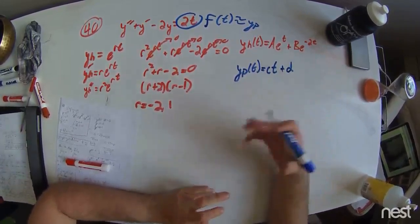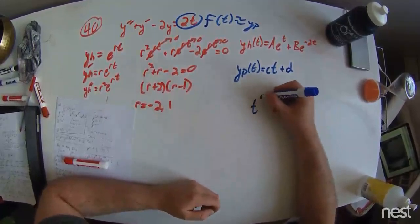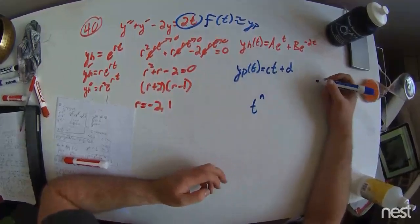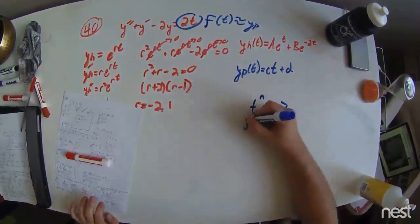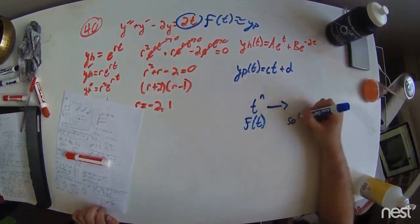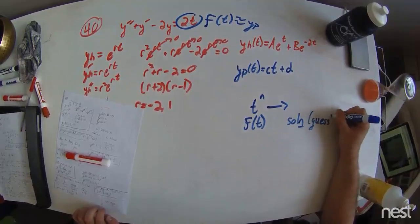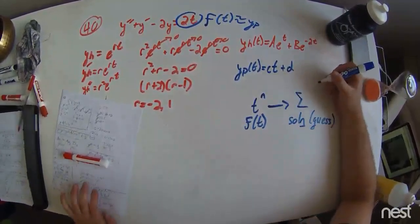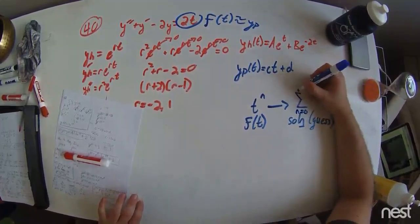We assume this because in the method of undetermined coefficients, whenever you have some t raised to the n power as the forcing function, you assume the solution to be our solution, really our guess.